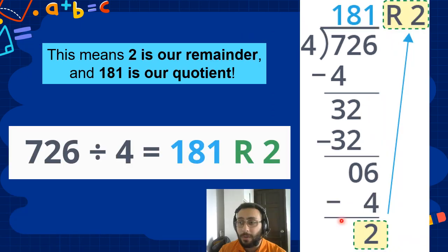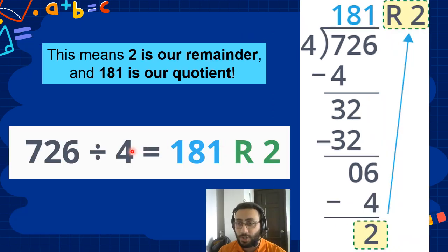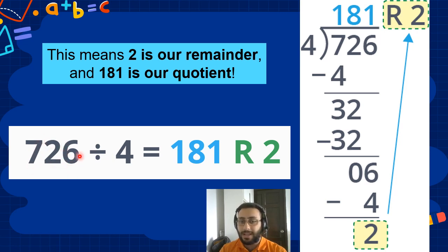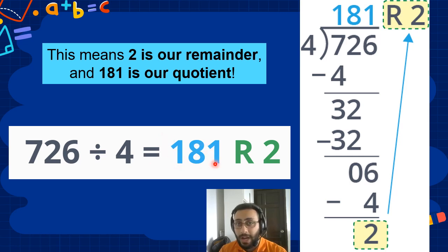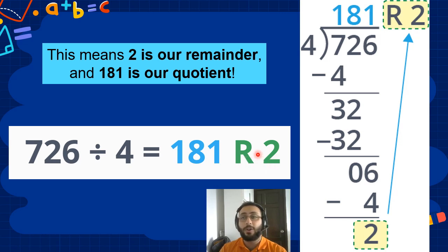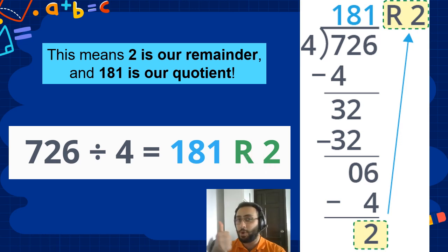So the final answer to 726 divided by 4 equals 181 with a remainder of 2. Great job.